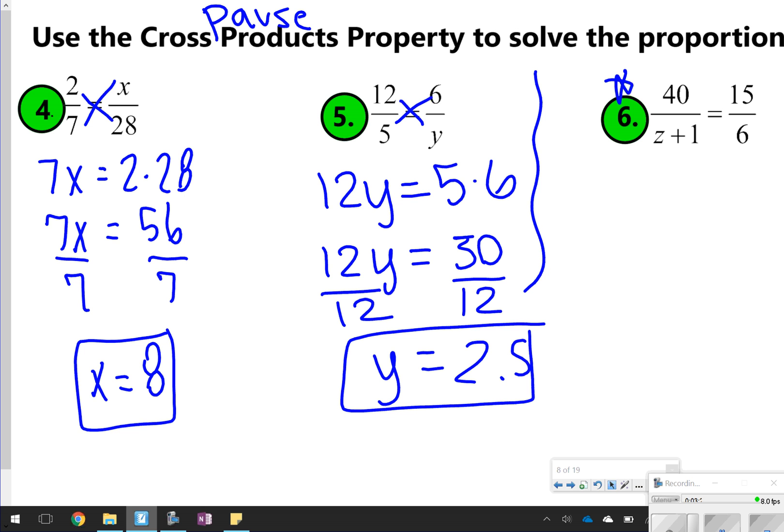The last one is tricky, so you do need to make sure you pay close attention here. Okay, you're still cross-multiplying. So 15 times z plus 1 and 40 times 6. Notice what I did here, the 15 is multiplying by the z and the 1.